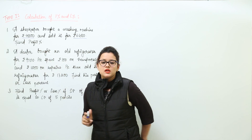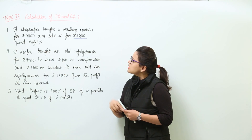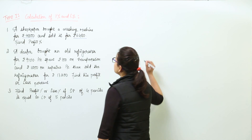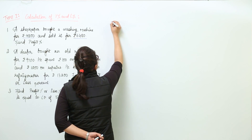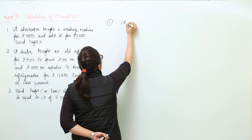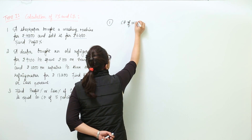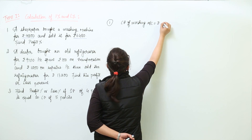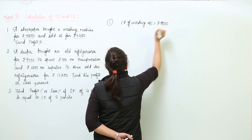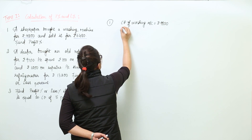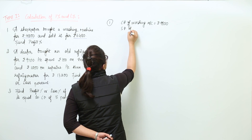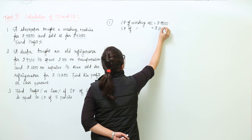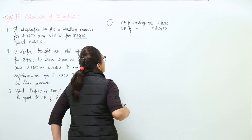Because the washing machine was bought at rupees 4800, that is our cost price. So we write: CP of washing machine equals rupees 4800. It has been sold, so the SP of washing machine equals rupees 6480.